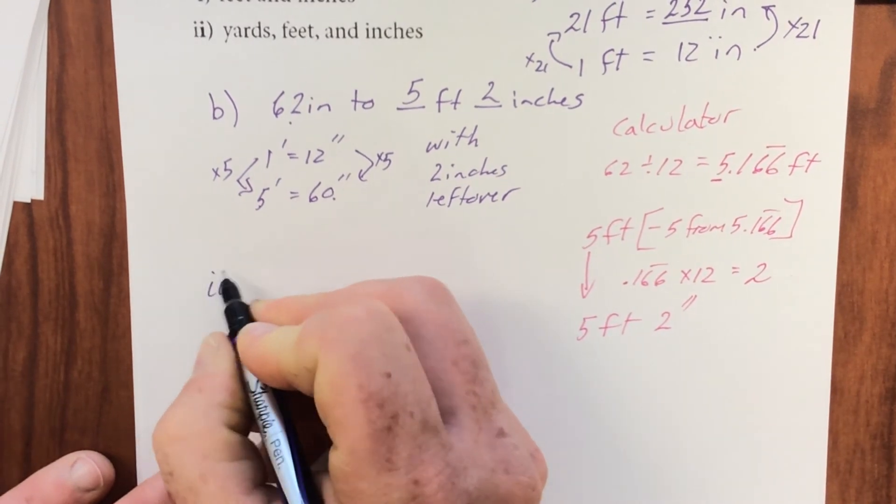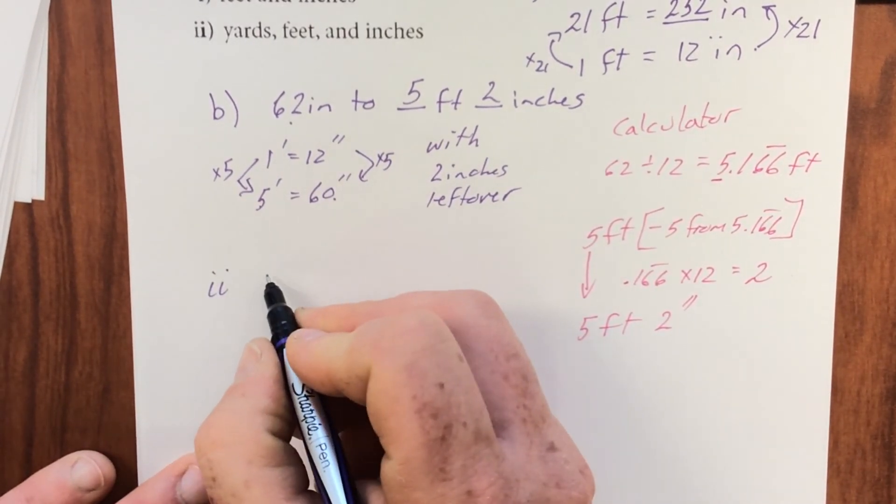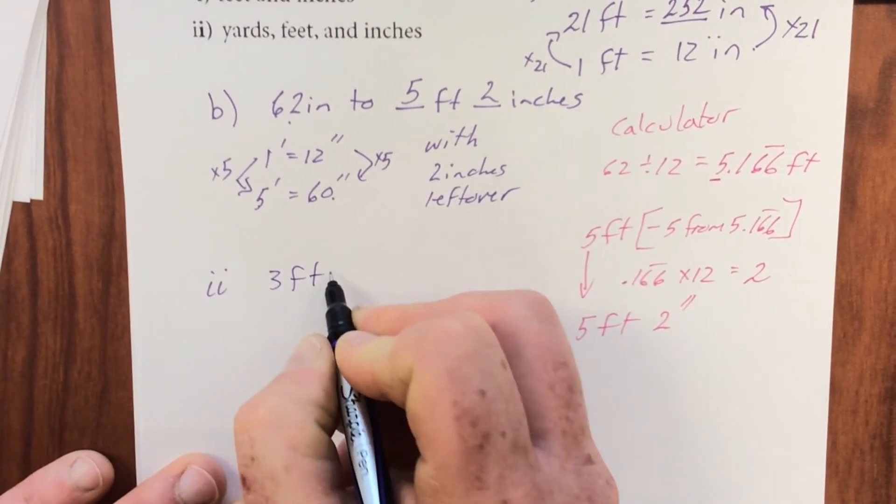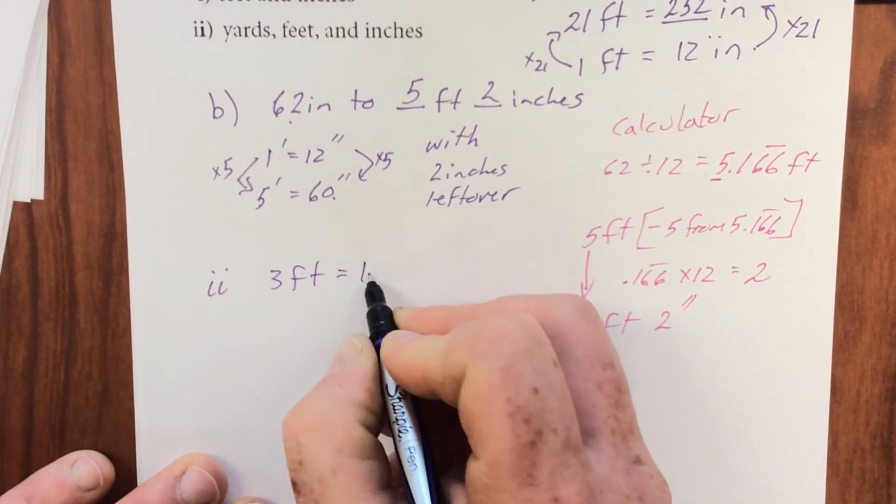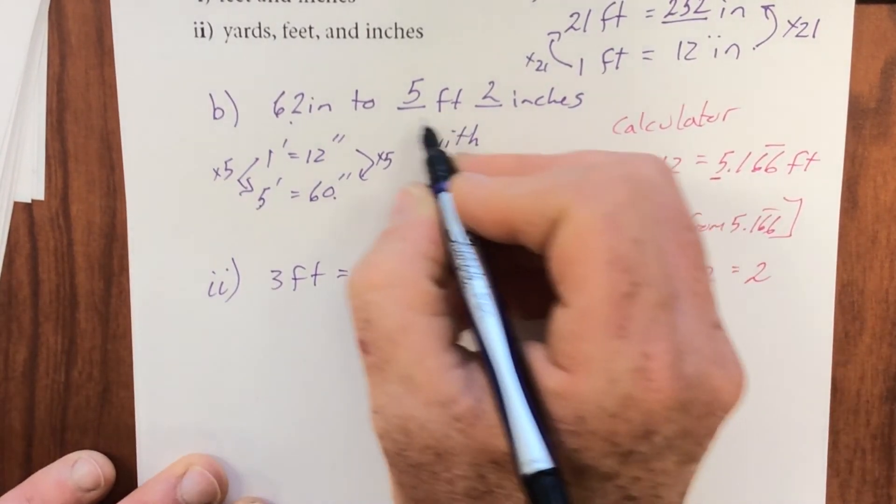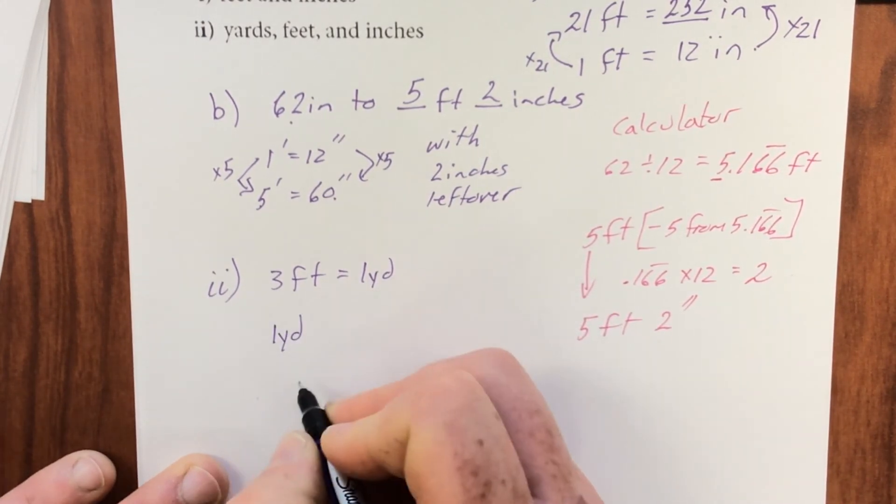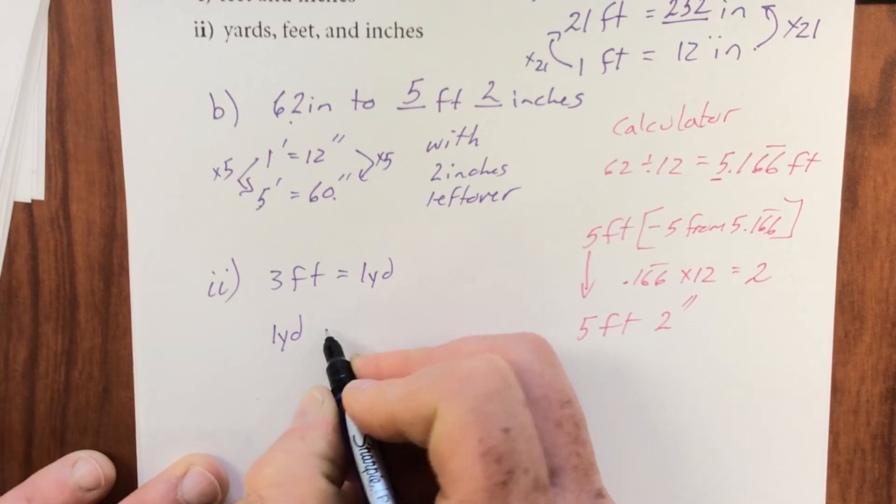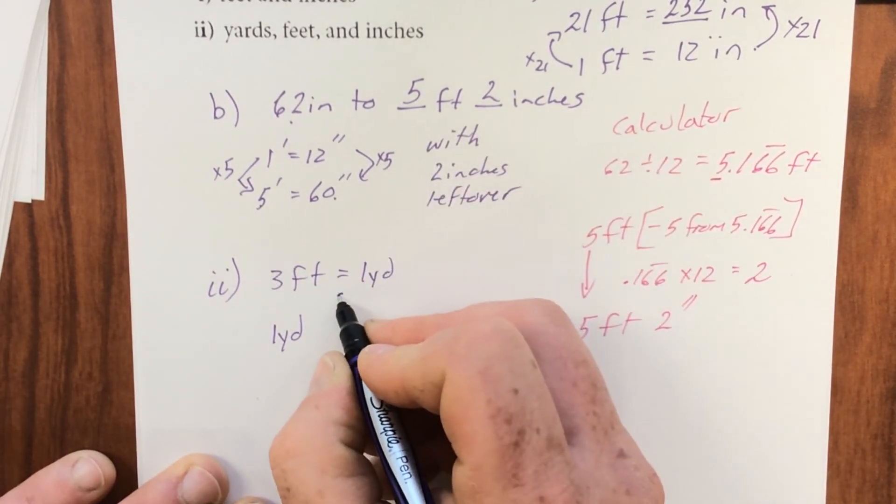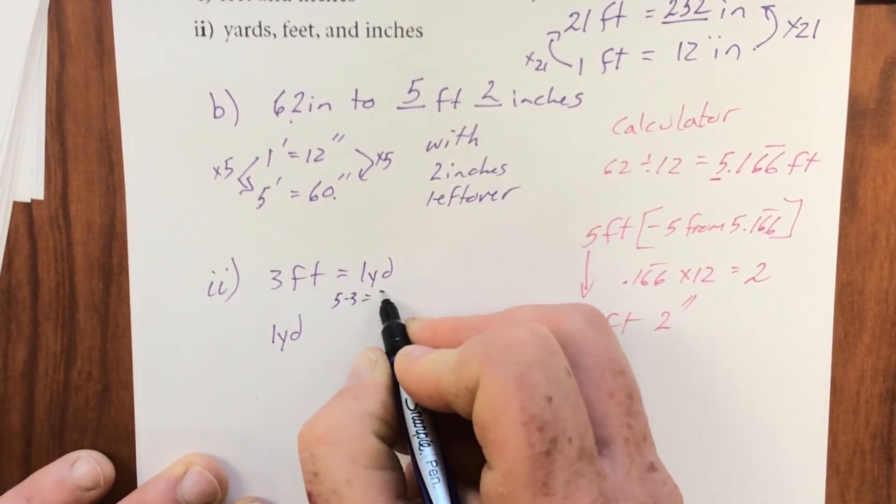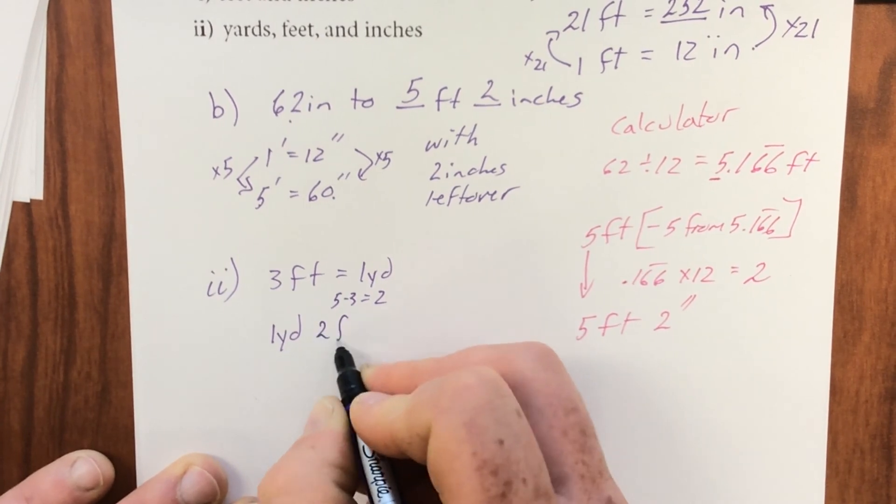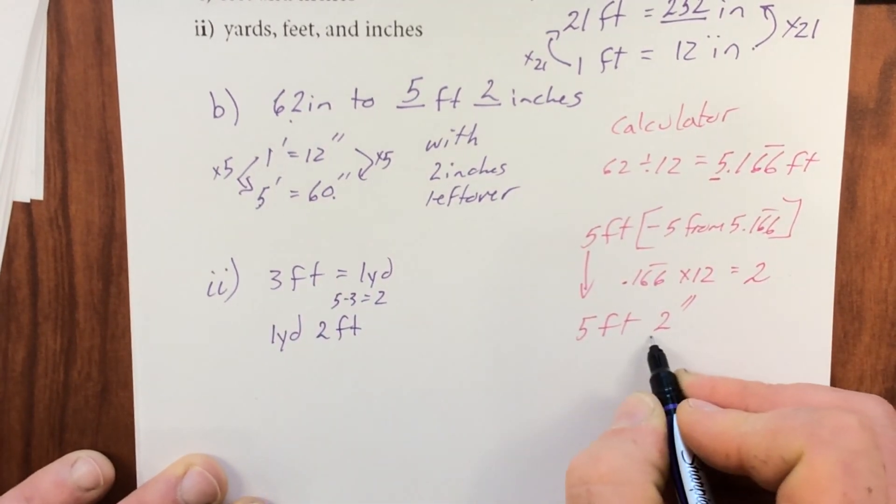Part II, I know there's 3 feet equals 1 yard. If I start with 5 feet and I take away 3 feet, I get that 3 feet becomes 1 yard. I'm left with I take away 3 equals 2, 2 feet, and I can't forget the 2 inches.